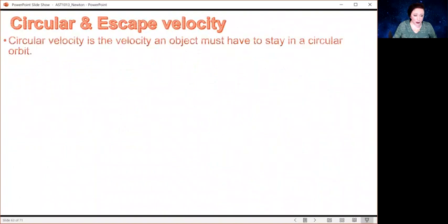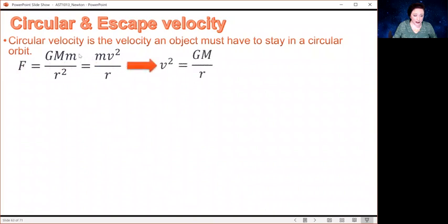Let's talk a little bit more about circular velocity and escape velocity. So we talked about how circular velocity is that minimum velocity that an object must have to stay in a circular orbit. And what we're going to do is we're going to equate the centripetal force and the gravitational force. And I can do a little bit of simple cancelling. So I've got an M on both sides. I've got an R here and two R's over there. So now I've got v² equals GM over R.